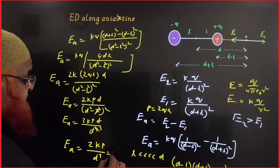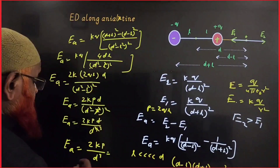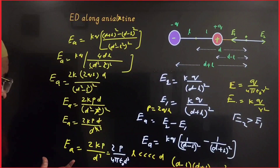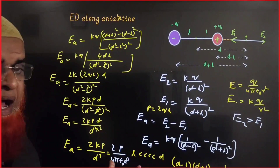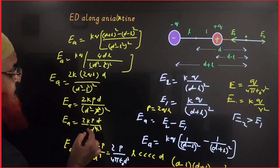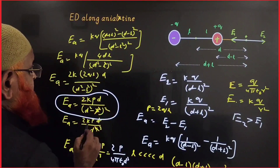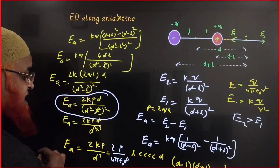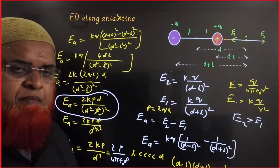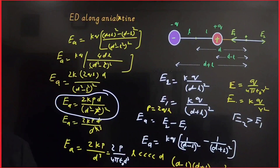Since K = 1/(4πε₀), the final formula becomes E_A = 2P/(4πε₀ D³). Without the short-dipole approximation, E along the axial line is 2KPD/(D² − L²)². This completes the simple derivation for electric field intensity along the axial line of an electric dipole.